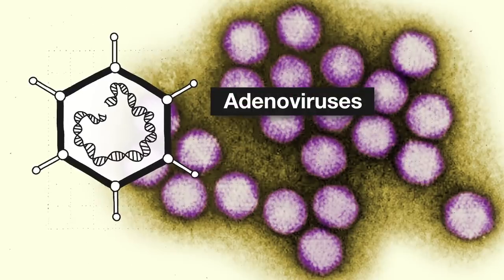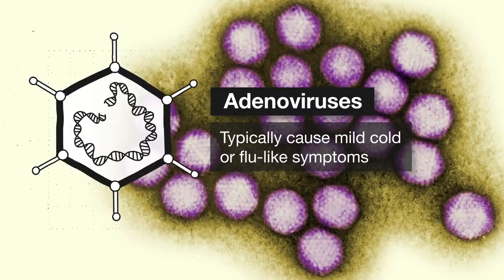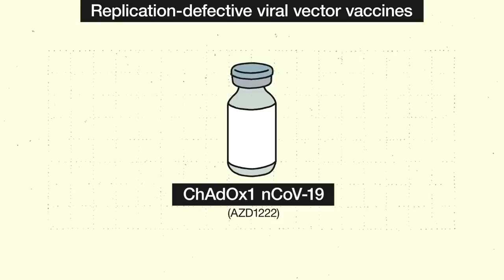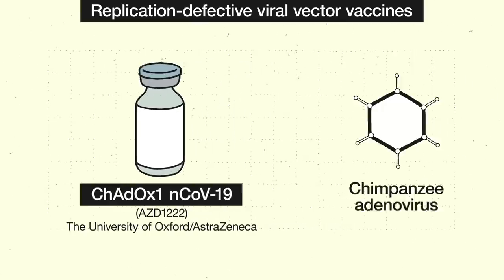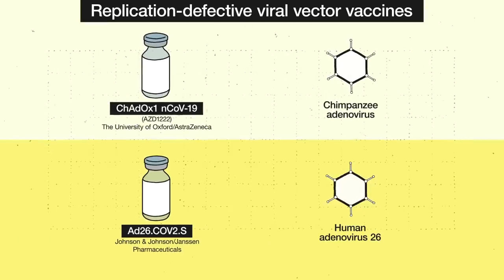Like these two vaccines, which are both in phase 3 clinical trials. Adenoviruses are common pathogens that typically cause mild cold or flu-like symptoms. This candidate, which was developed by the University of Oxford and AstraZeneca, uses a chimpanzee adenovirus, while this candidate from Johnson & Johnson uses a human adenovirus 26.